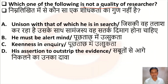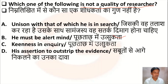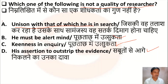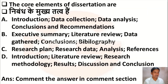The next question is: which one of the following is not a quality of a researcher? Option A: unison with that which he is in search, Option B: he must be alert-minded, Option C: keenness in inquiry, Option D: assertion to outstrip the evidence. Options B, C, and D are true qualities. Unison with that which he is in search is not a characteristic of a researcher, so Option A is the correct answer.